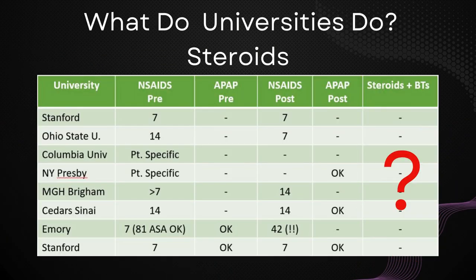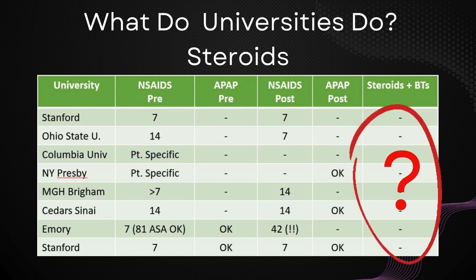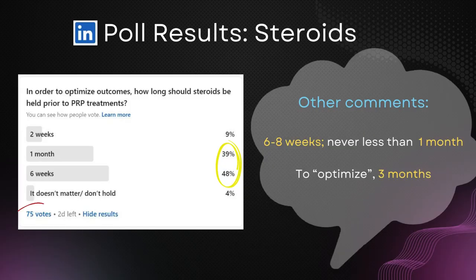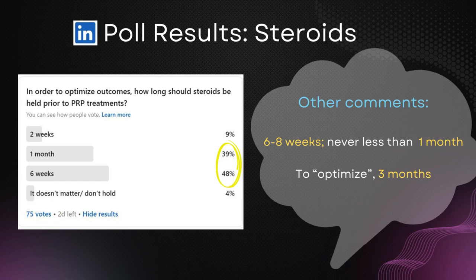Coming back to the chart — what do they do at PRP universities? None of them comment on steroids before or after PRP. What do practitioners do? 87% of responders ask their patients to stop steroids four to six weeks prior to a PRP procedure, and someone out there is even stricter — three months before and after a PRP procedure.